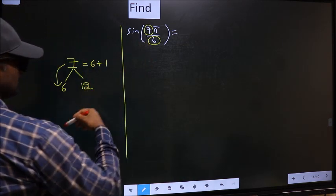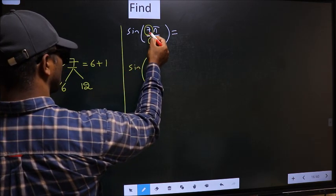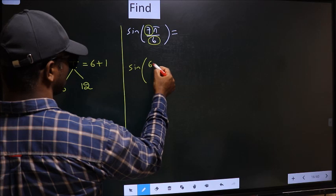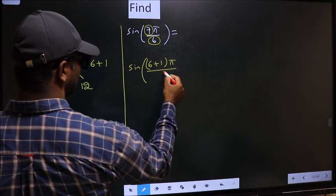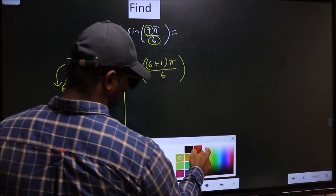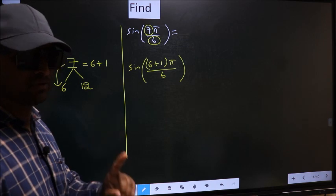So this will change to sine of, in place of 7 we should write 6 plus 1, π/6. This is your step 1.